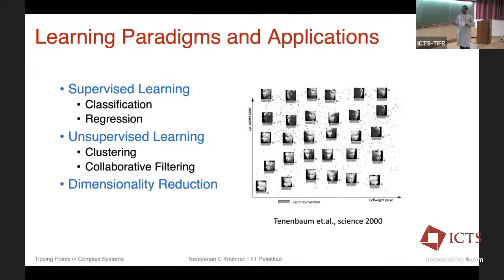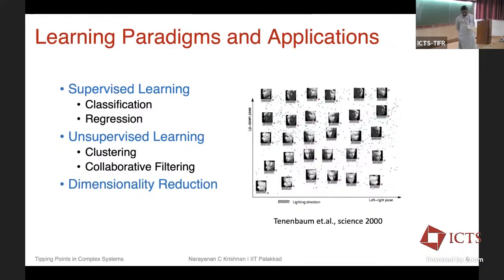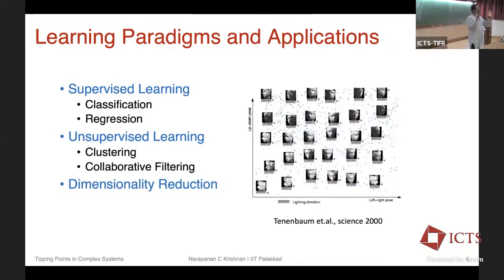Another important learning paradigm is dimensionality reduction, which was immensely popular until the advent of deep neural networks and huge computational resources through GPUs. To illustrate: suppose I give you an image — what is an image? How can you mathematically represent an image? It is a set of pixels with structure — what is that structure?